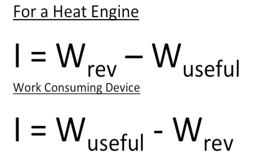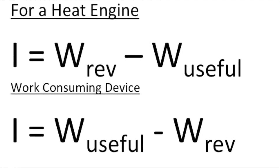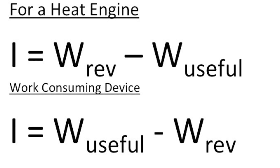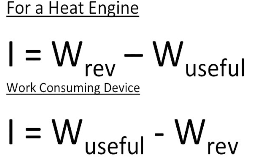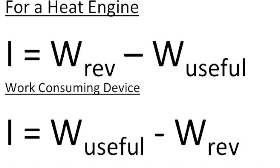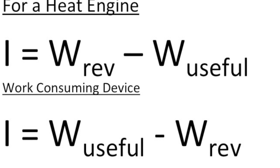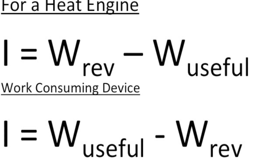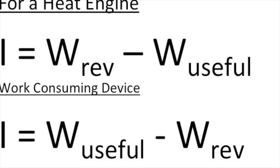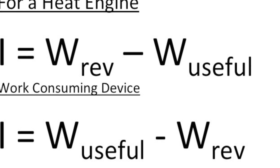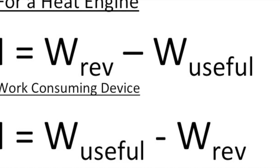In a reversible process, the irreversibility is zero because no entropy is generated. By subtracting our actual work output from the reversible work output, we get the amount of irreversibility in our process. This allows us to see how much of the available work we are actually using and how much our device can improve its efficiency. So let's look at an example of this.